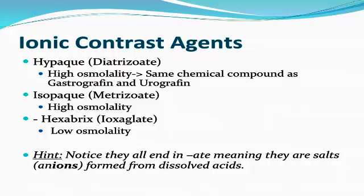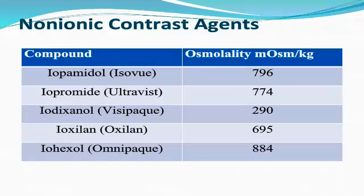A key to remember which contrast agents are ionic is that ionic contrast agents all end in 'ate', meaning they're salts or anions formed from dissolved salts. A few of the common non-ionic contrast agents used intravenously include iopamidol, iopromide, iodixanol, ioxilan, and iohexol.